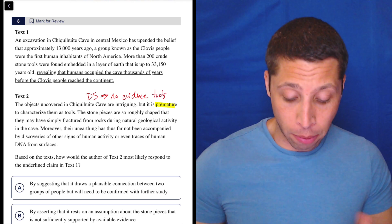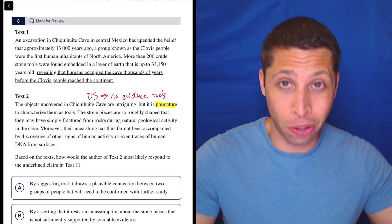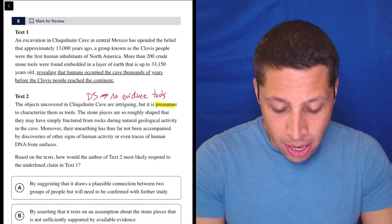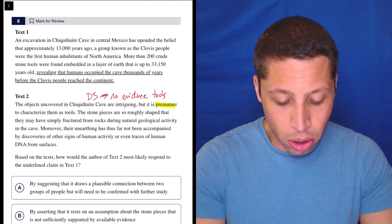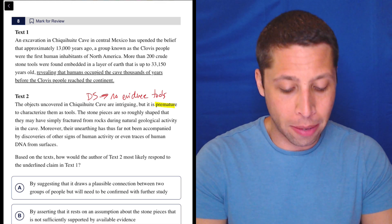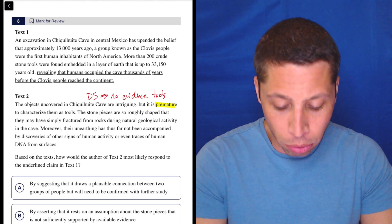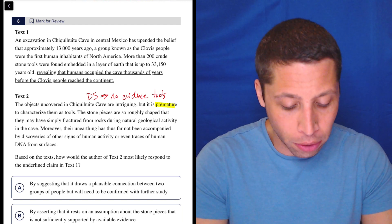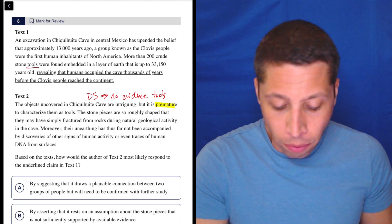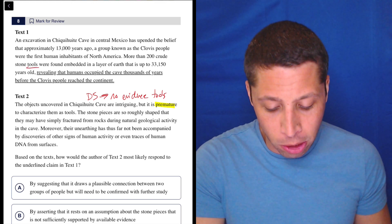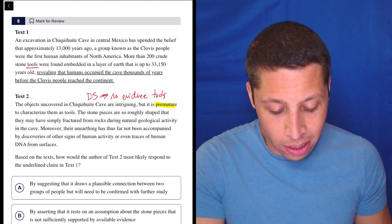Now let's look at what they would say about what they're saying in text one. So going back to text one, an excavation in this cave in central Mexico has upended the belief that approximately 13,000 years ago, a group known as the Clovis people were the first human inhabitants of North America. More than 200 crude stone tools were found embedded in a layer of earth that is up to 33,150 years old. So they're just calling them tools, okay? Revealing that humans occupied the cave thousands of years before the Clovis people reached the continent.